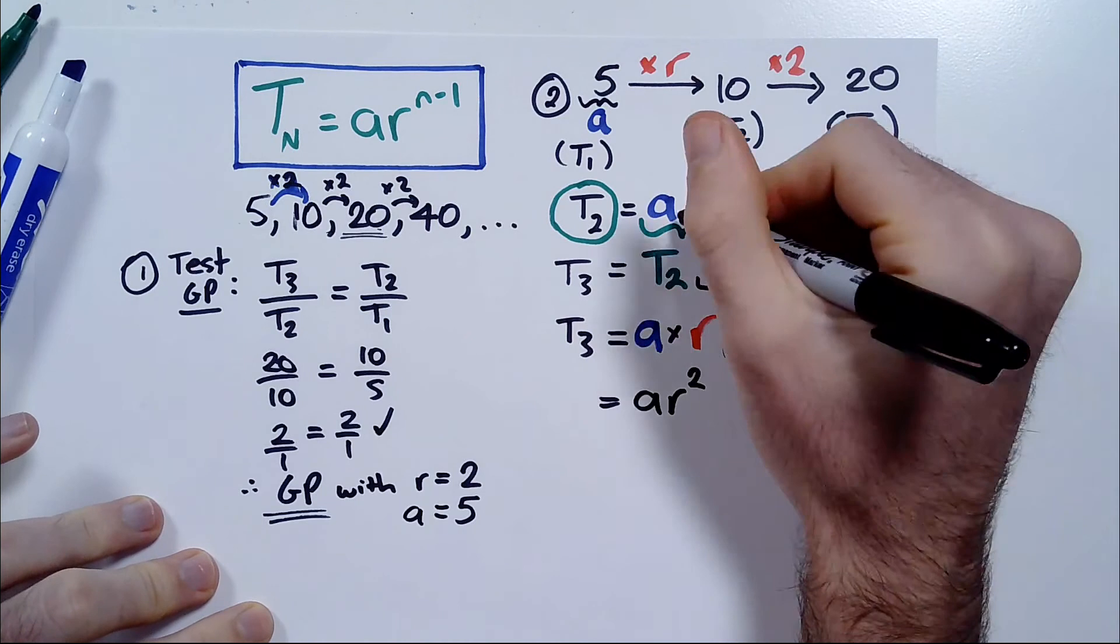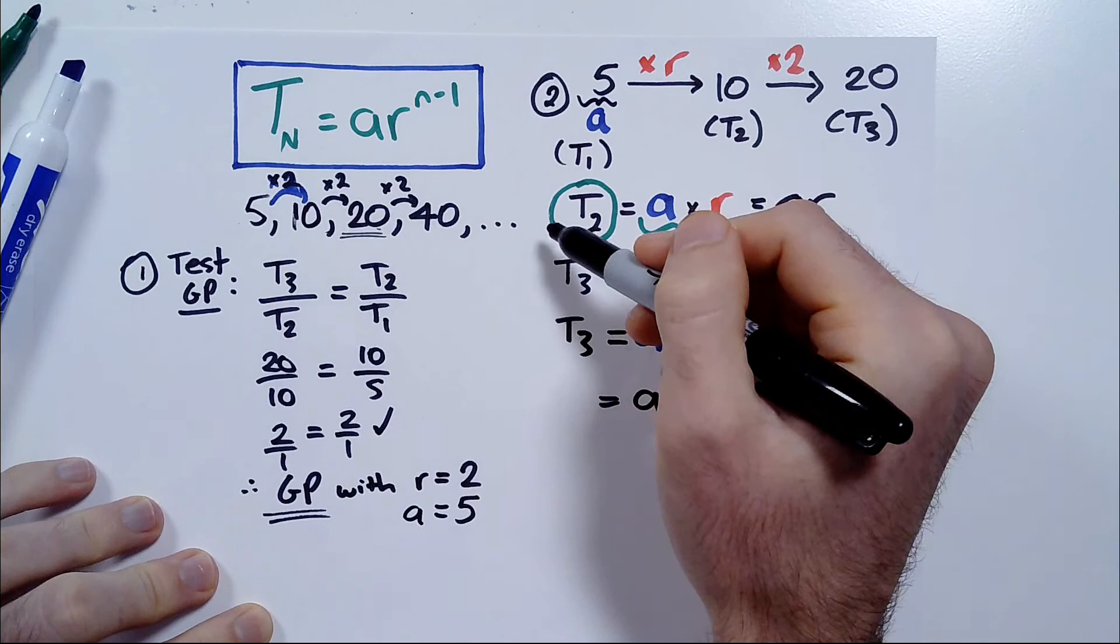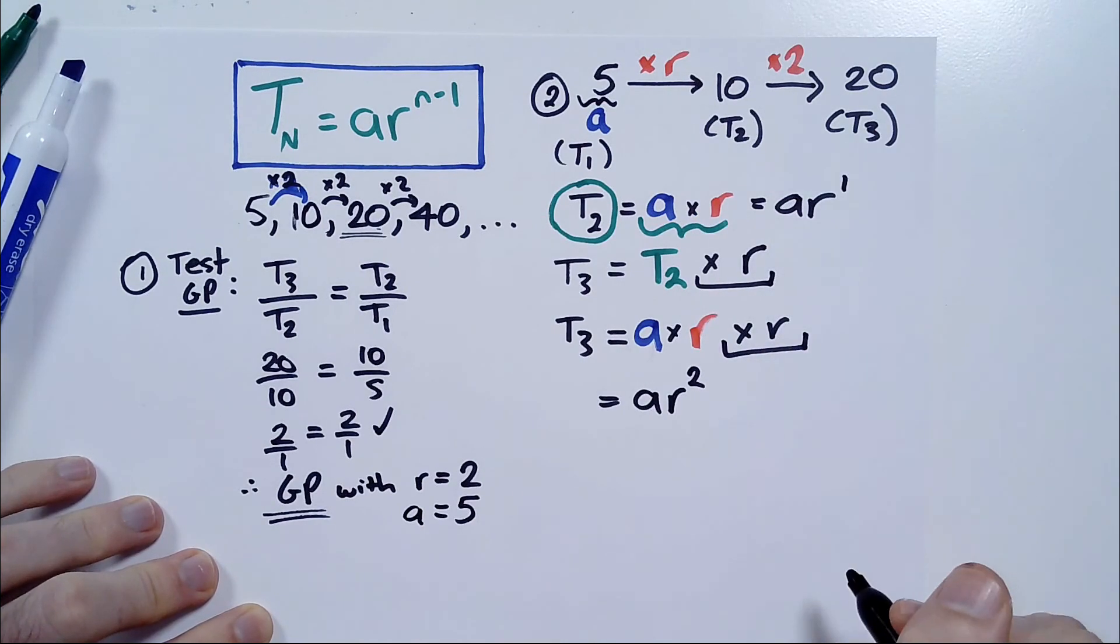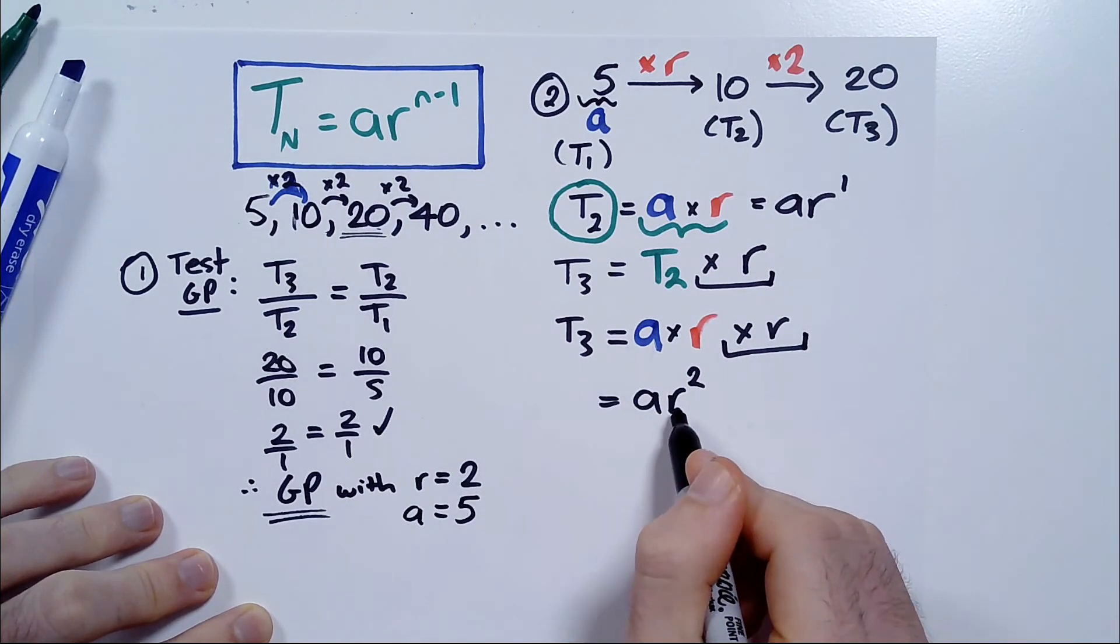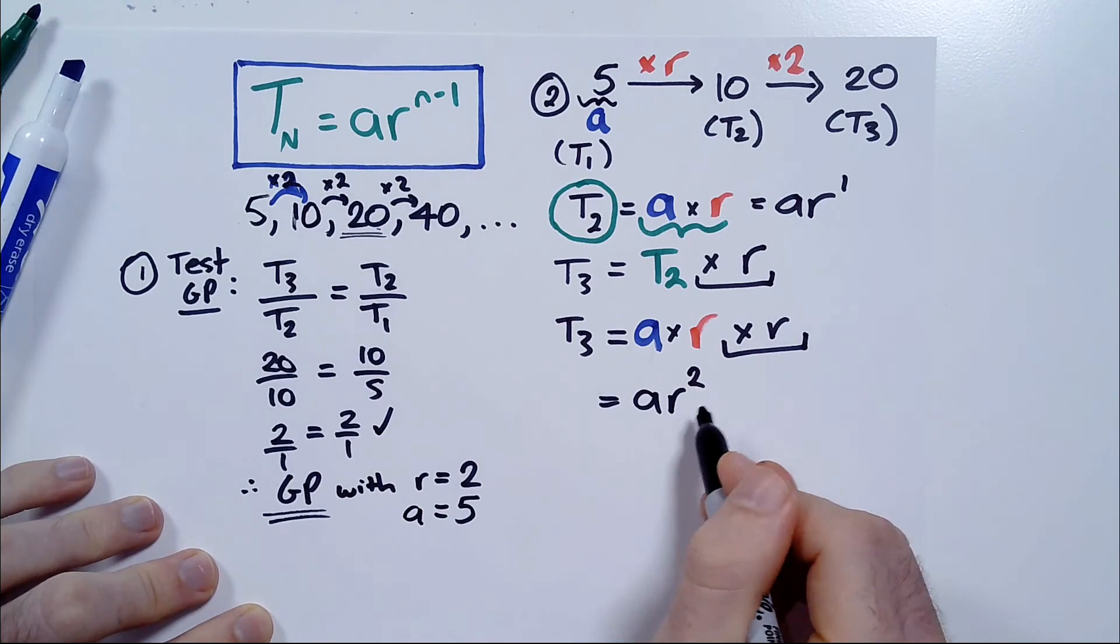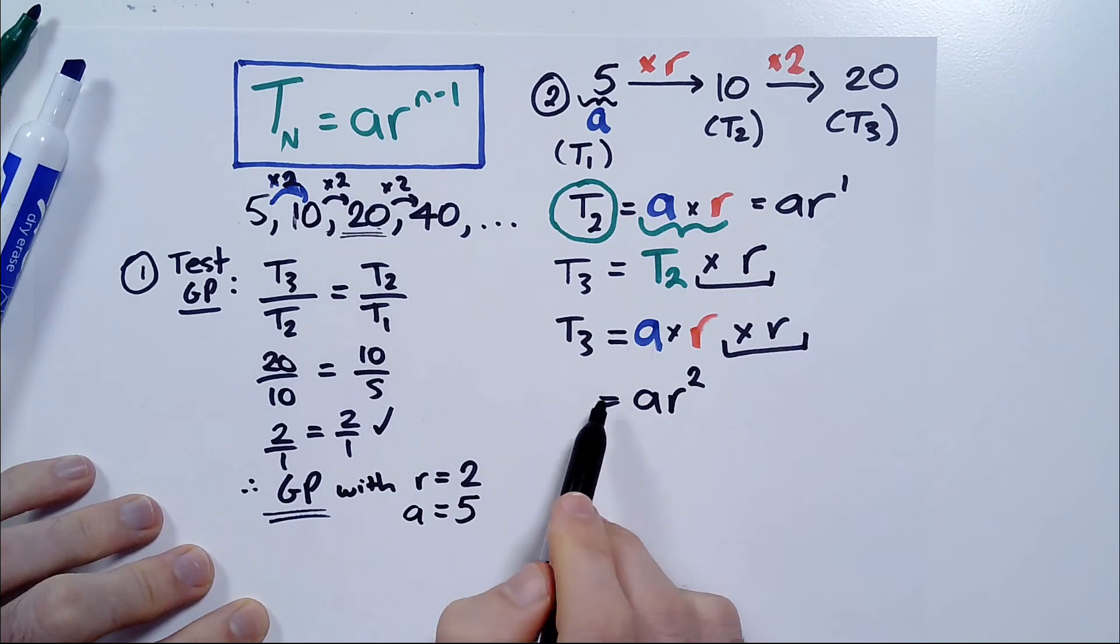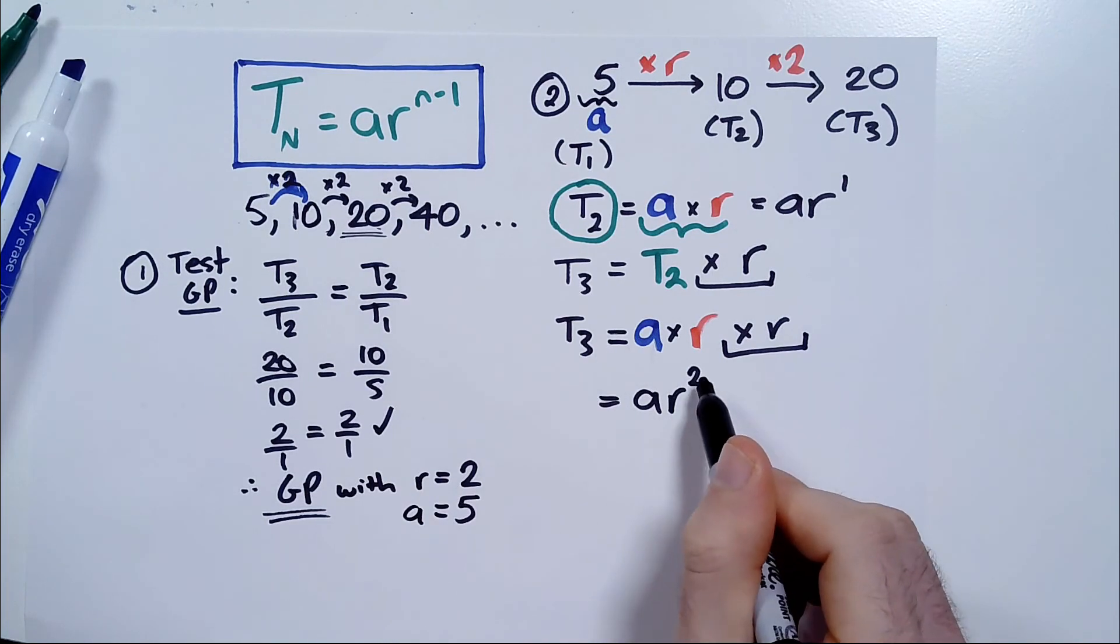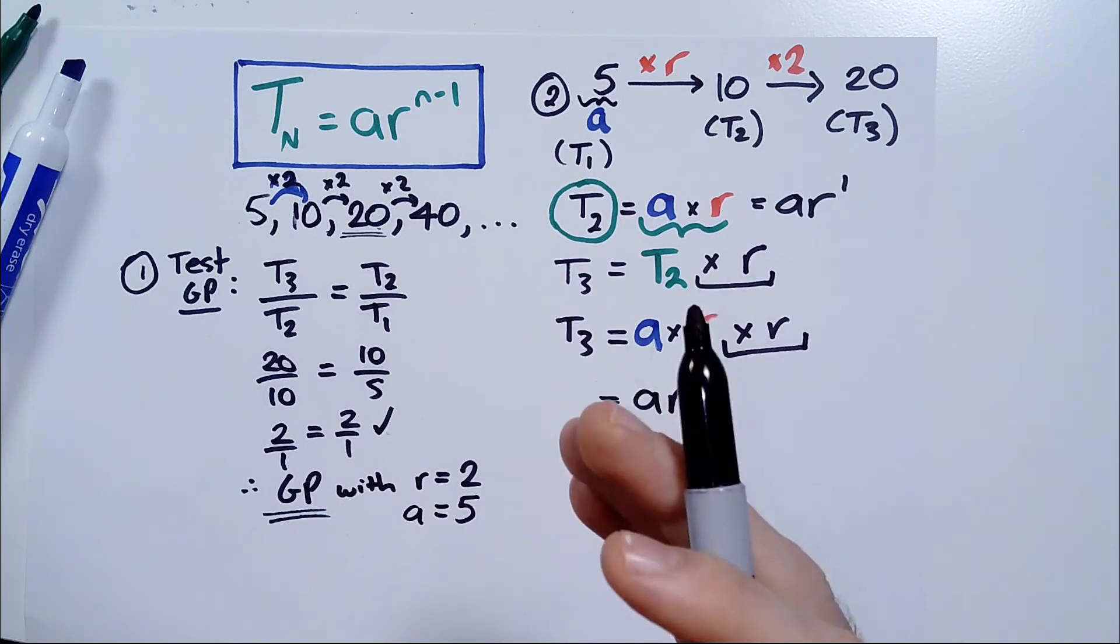And T2 equaled A times R, which is AR. So, try and look at the pattern here. To get the second term, you multiplied the first term, A, by R. Just R. And there's an invisible one there, by the way. We don't have to write the one, but there is a one. Here, to get the third term, you times R by itself twice, which is R to the power of 2. So, it's A times R to 2 to give you the third term.